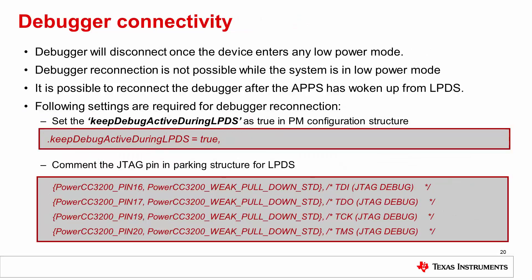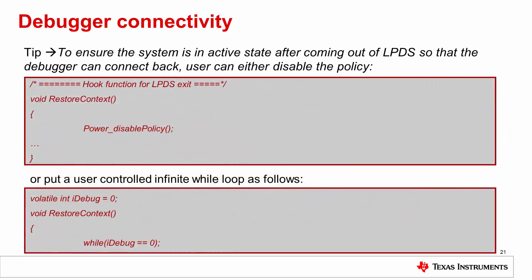The debugger will disconnect no matter which low power mode the device enters. It is possible to reconnect the debugger once the device comes out of LPDS and stays in active mode. Settings which keep the debug interface alive in LPDS and do not park the JTAG pins are necessary to reconnect to the debugger. To reconnect after waking from LPDS, the application must ensure the MCU does not immediately re-enter LPDS — this can be done by disabling the power policy in an LPDS exit hook function, or by using a user-controlled while loop that can be broken after reconnecting.